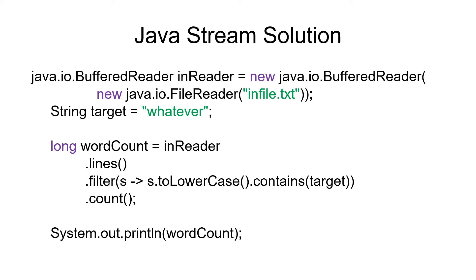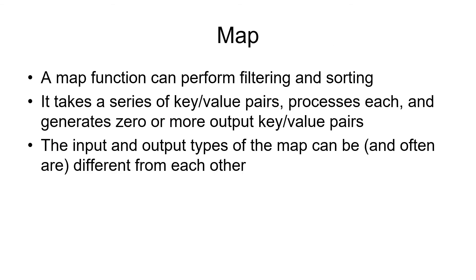You'll notice that we're calling lines() on the reader, filter() on that, and count() on that. It's very common in stream-oriented programming to line up the methods one per line rather than stringing them along on one line. The map function can perform filtering and sorting — it processes key-value pairs and returns an output or no output at all. The output can be the same type or a different type from the input.